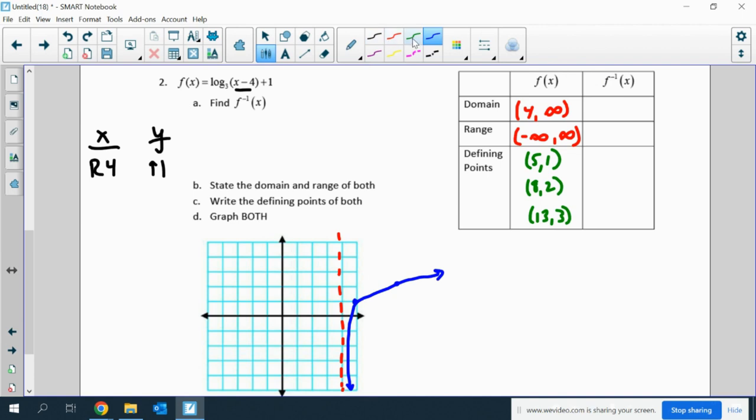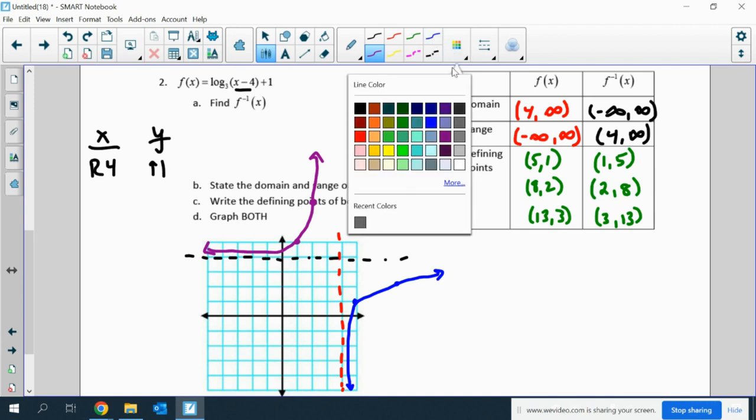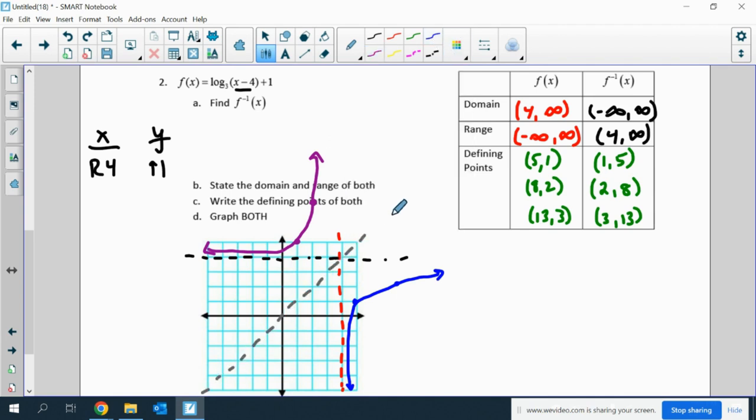Now, to find f inverse, I know that all of my points are going to flip. And I also know that my domain and range are going to flip. So I'm going to have a horizontal asymptote at y equals 4. I can graph the points 1, 5, then 2, 8. And again, it's guesswork because we're off the graph pretty quick. But once again, if I graph the line y equals x, it does look like the blue and the purple kind of flipped over that line.